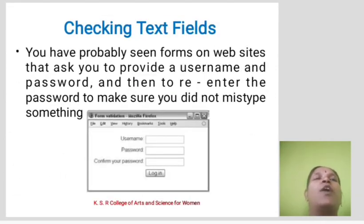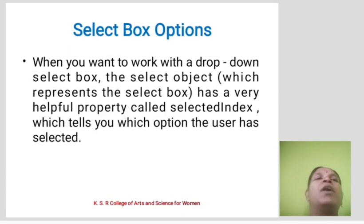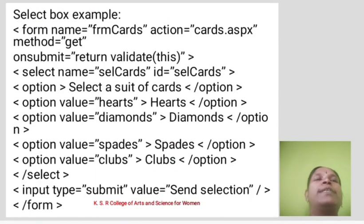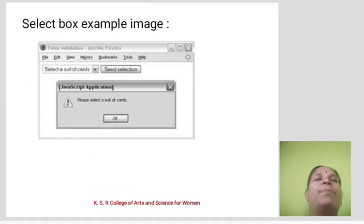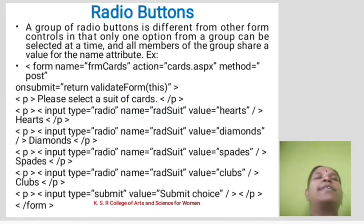Checking text fields. You have probably seen forms on websites that ask you to provide a username and password and then to re-enter the password to make sure you did not mistype something. Select box options. When you want to work with a drop-down select box, the select box has a very helpful property called selectedIndex, which tells you which option the user has selected. Radio buttons. A group of radio buttons is different from other form controls in that only one option from a group can be selected at a time, and all members of the group share the same name attribute.